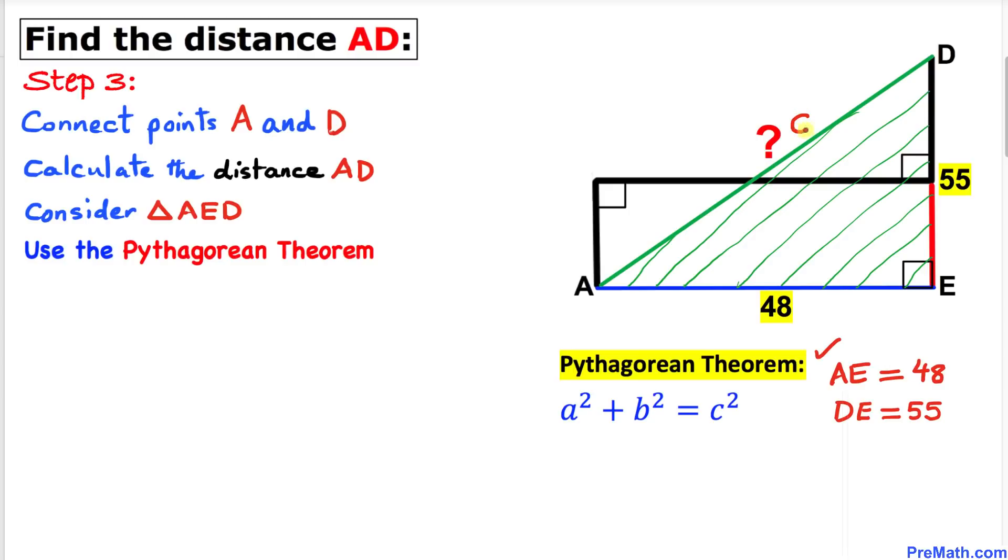In this triangle, the longest side AD is going to be always our side c. Let me call this side a and this side b. Let's go ahead and fill in the blanks in this Pythagorean formula.